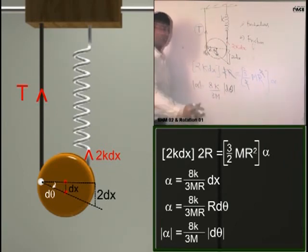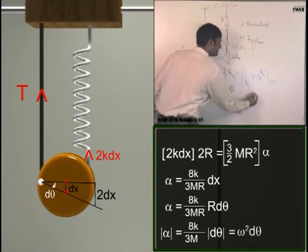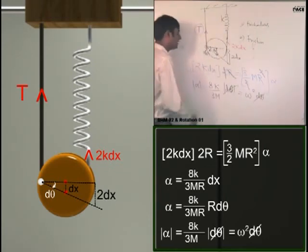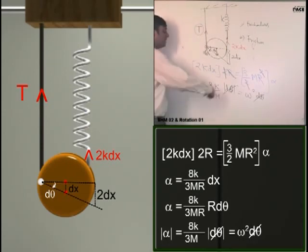Pay attention. This is equal to omega square d theta. d theta gets cancelled. Omega is this. Time period we got. Have you understood the solution? Yes. How many of you understood it?